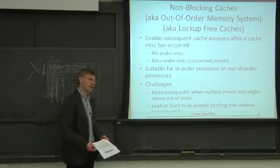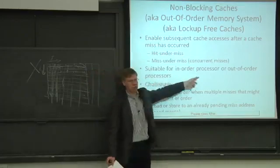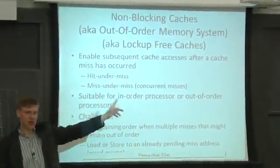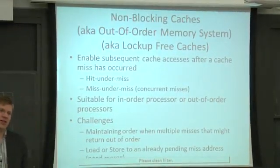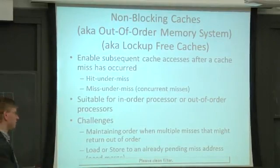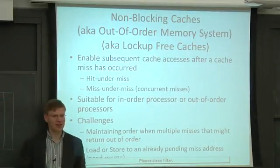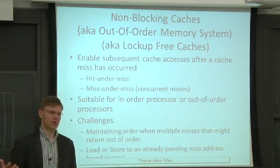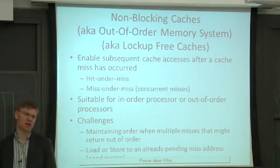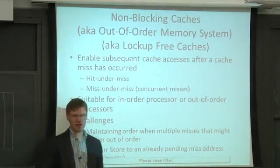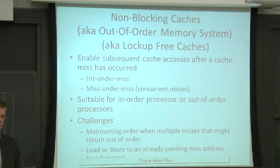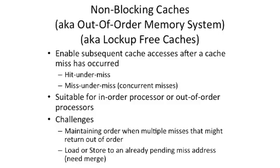One of the big points I want to get across today is that this is not only for out-of-order processors. Believe it or not, you can actually hook up a non-blocking cache to an in-order processor, or even a VLIW in-order processor. One way you can do that is when you take the cache miss, you mark the register as not being there, so when you go to actually read the data, you block. You can have in-order processors with out-of-order memory systems, and you can have out-of-order processors with out-of-order memory systems.